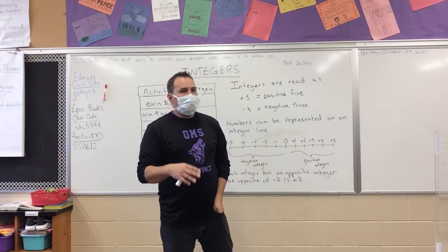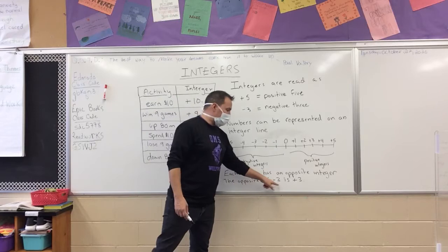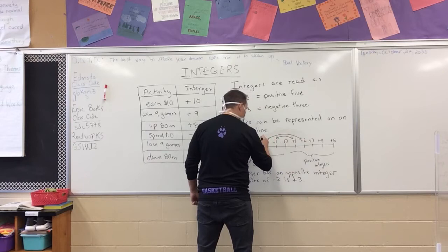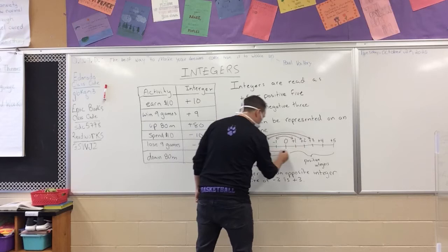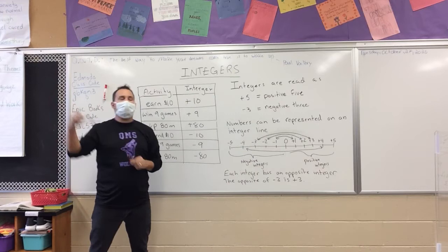You need to be careful when dealing with credit cards. Lastly, each integer has an opposite integer. The opposite of negative three is positive three. So opposite integers work like this: negative one and positive one, negative two and positive two, negative three and positive three, negative four and positive four. What would be the opposite integer for negative five? Positive five — right, it's the opposites.